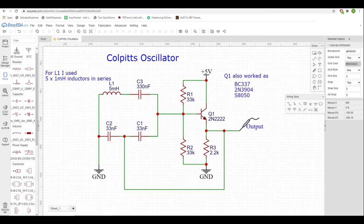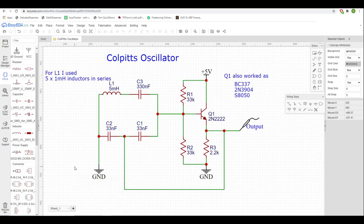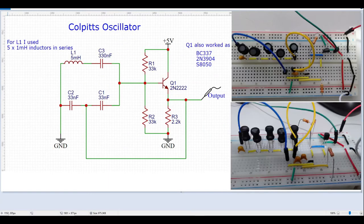On the breadboard it looked like this. The components that derive the frequency are C1, C2, and L1. In my case, I didn't have a 5 millihenry inductor, so I used five 1 mH inductors in series, which you can see on the breadboard over here.